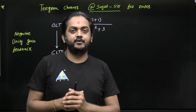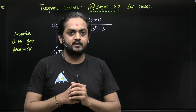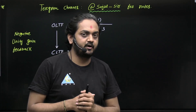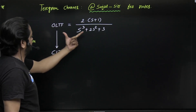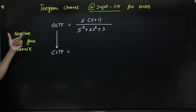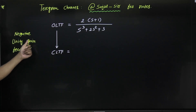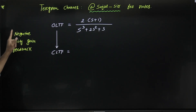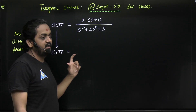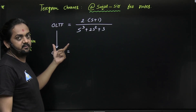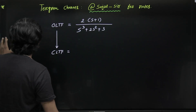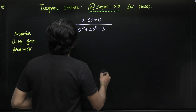Hello dear students. In this video I will provide some important short tricks. If an open loop transfer function (OLTF) is given for a negative unity feedback system — this is compulsory, it should be a negative unity feedback system — then how to find the closed loop transfer function (CLTF) directly from the OLTF.